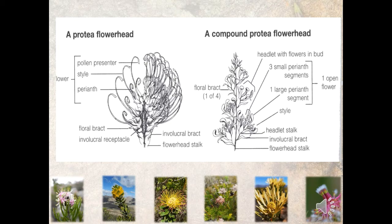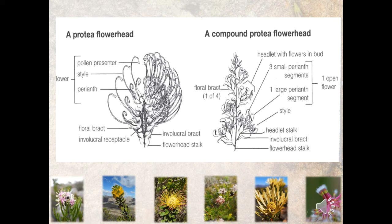In some genera of Proteaceae you have a compound flower head. Compound flower heads consist of individual flowers clustered together in little headlets, and then those headlets are clustered together to form the overall flower head. You can see the floral bract subtending the actual flower, the involucral bract at the base of the flower head itself, the headlet stalk, the individual clusters of flowers with their perianth segments, and then the style, stigma, and ovary.